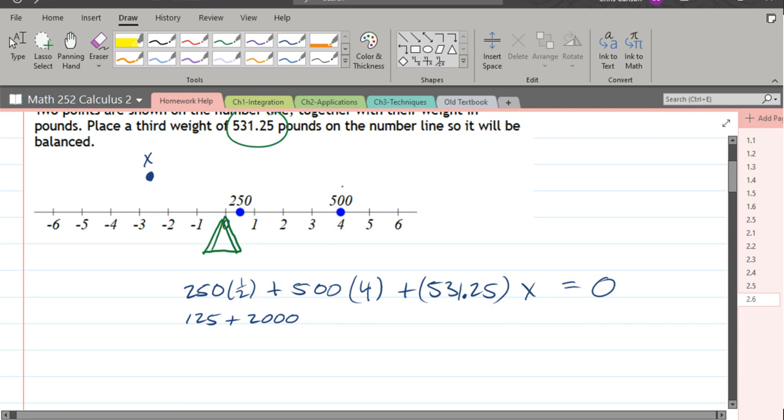We're going to try to solve for x, so let's subtract the 531.25 to the right side. And then solve for x, just divide by negative 531, and that should be your x value right there.